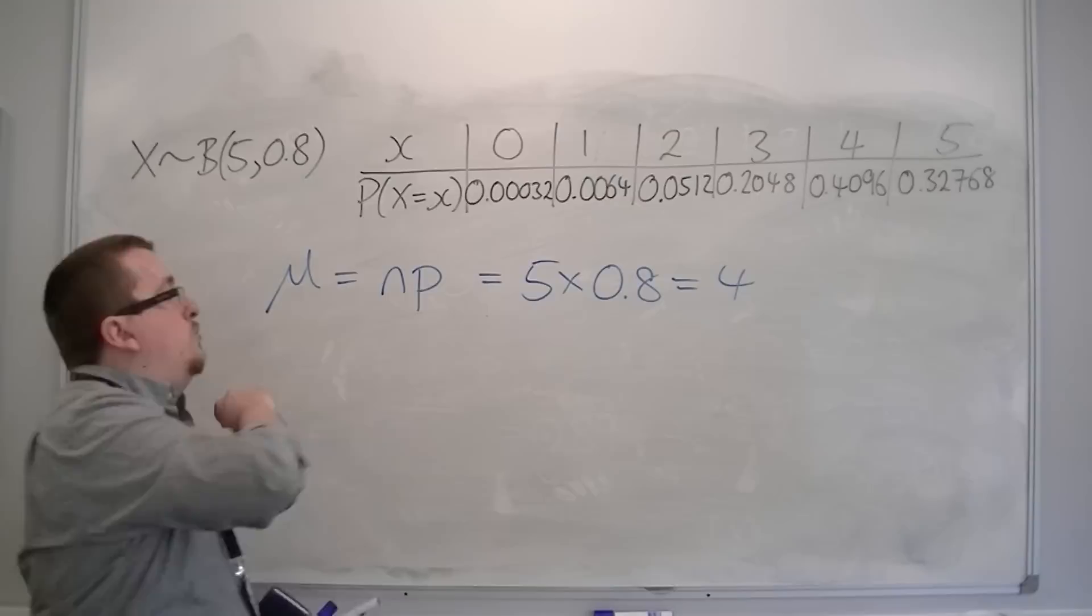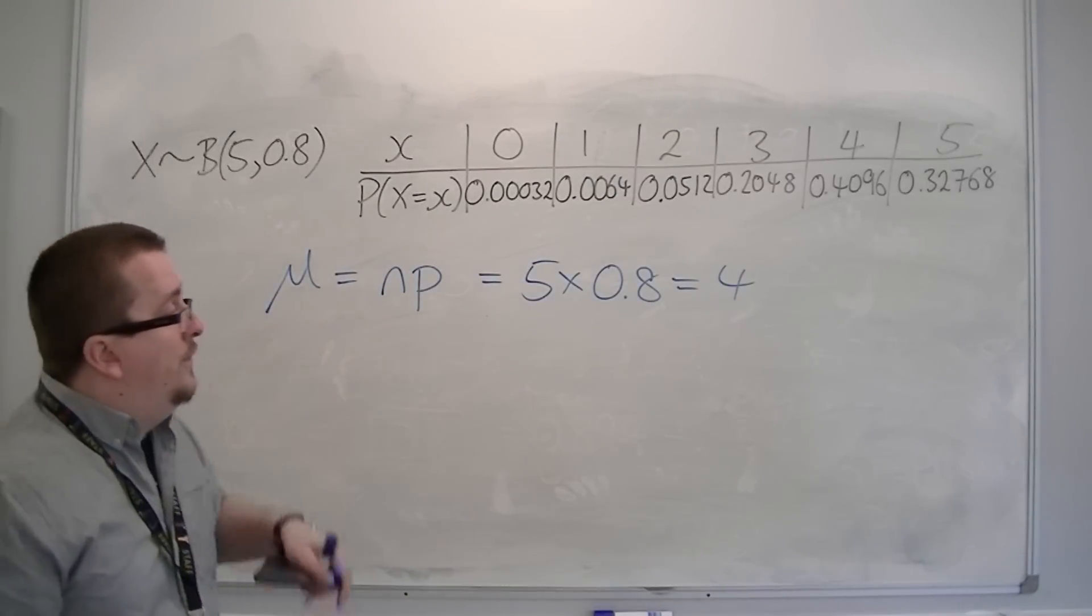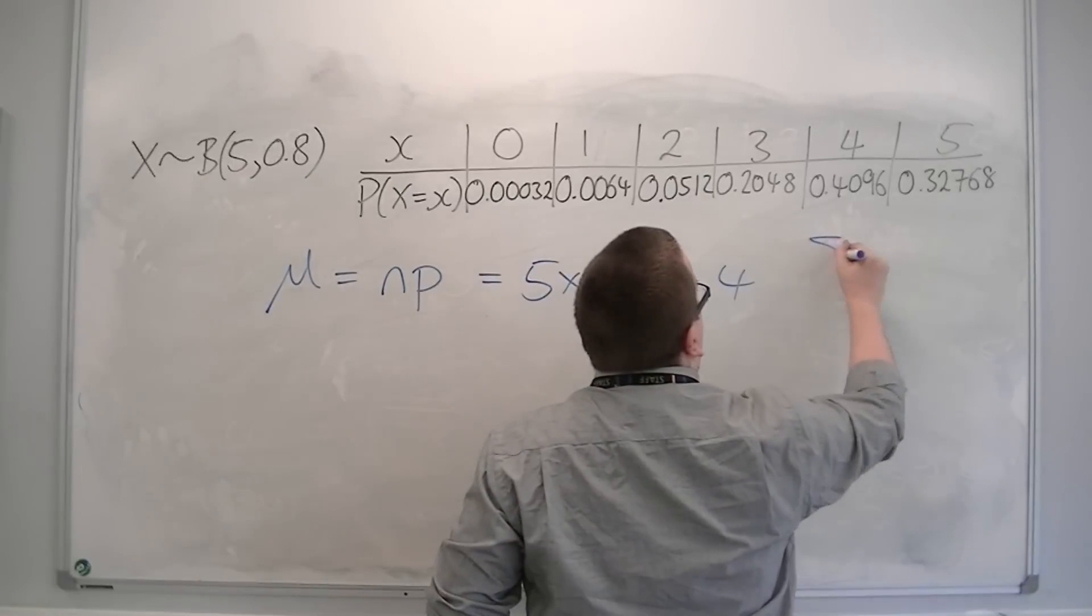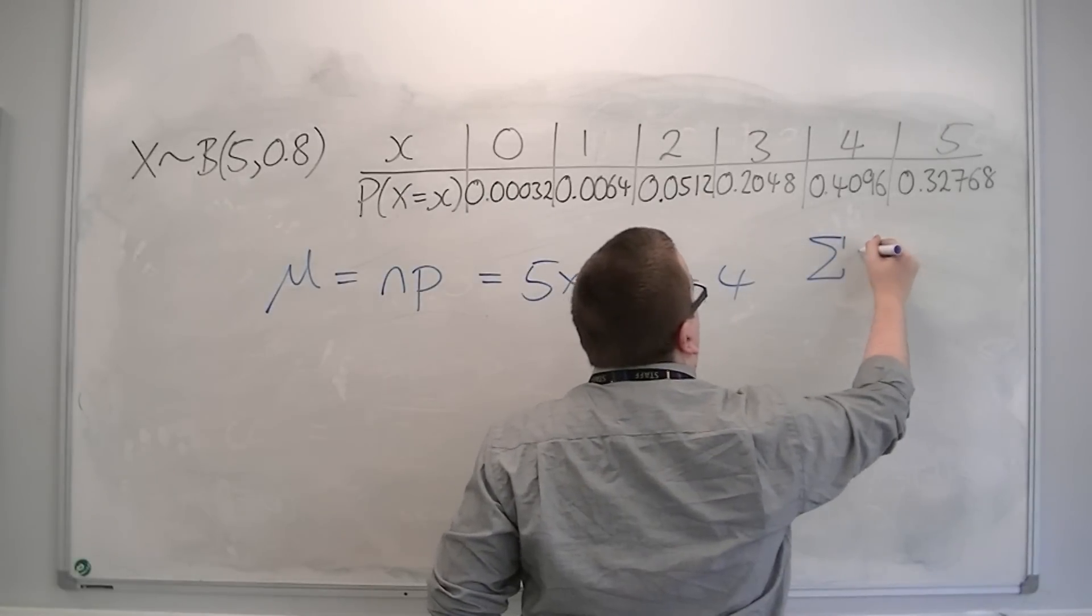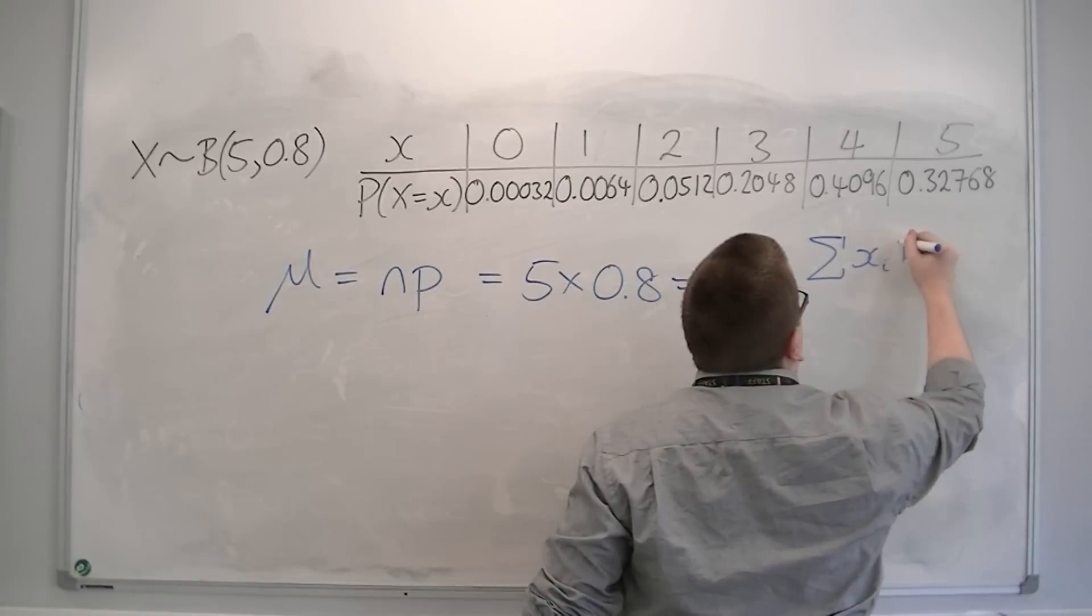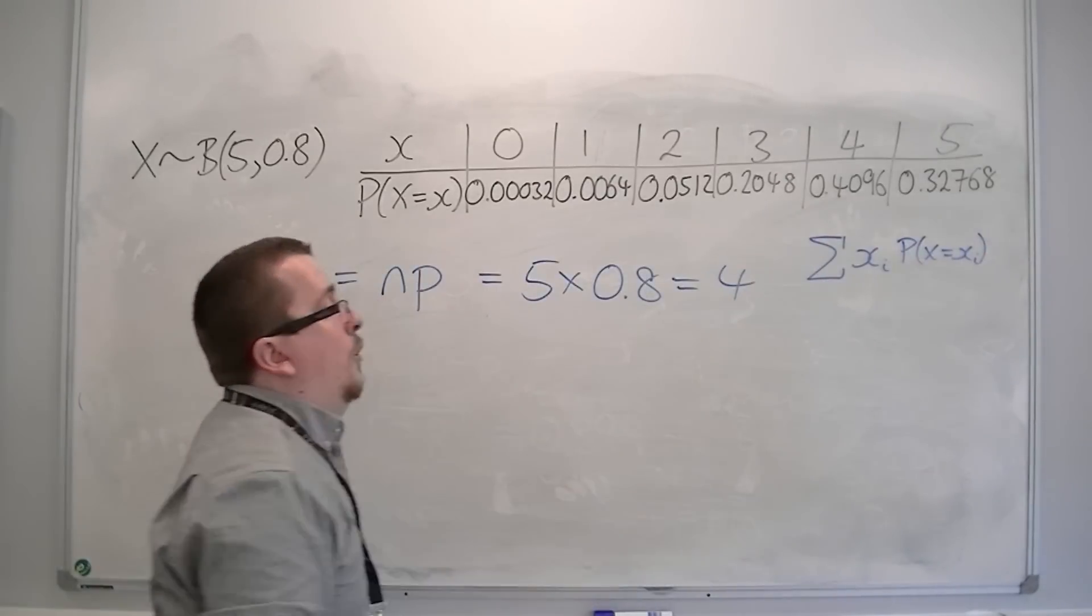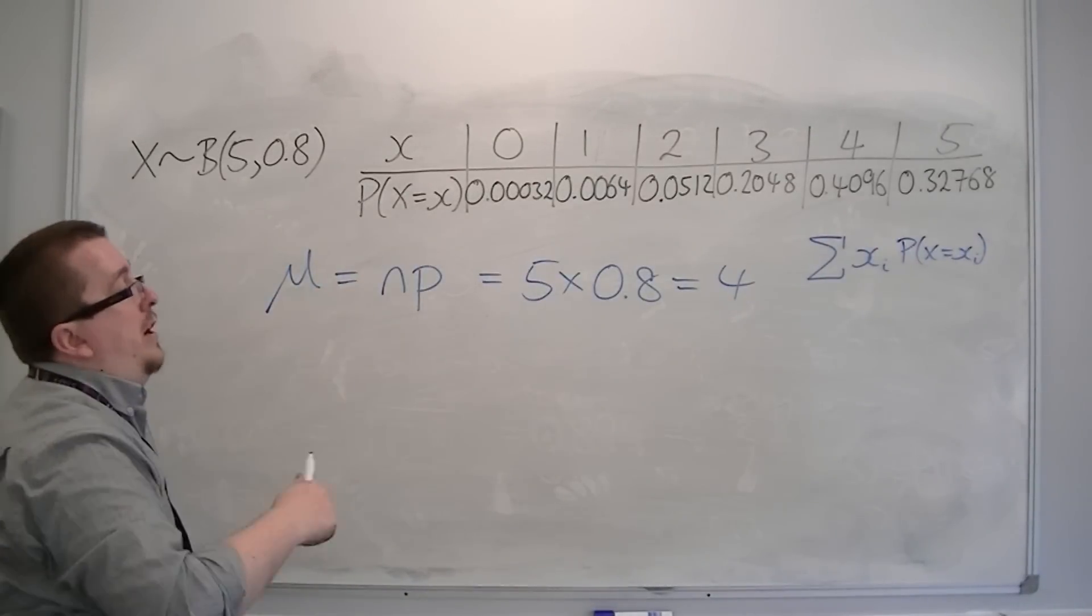There is more background to this. I'm not going to go through it in this video. But effectively, you can come to the same answer by multiplying all of the x's by their respective probabilities and adding those 6 numbers up.